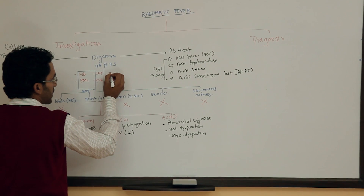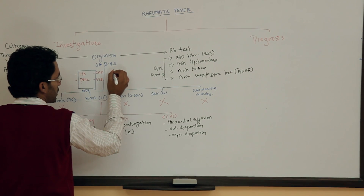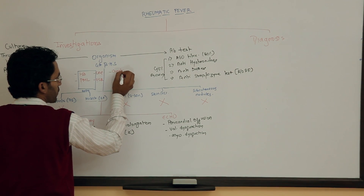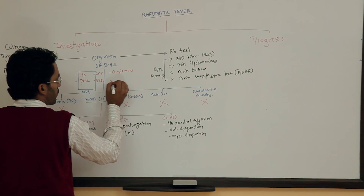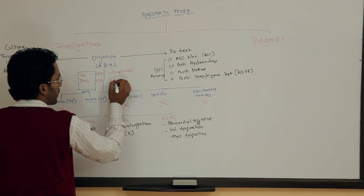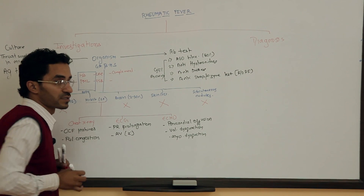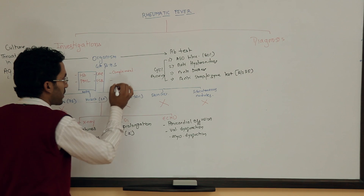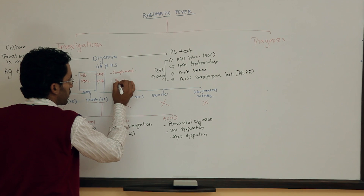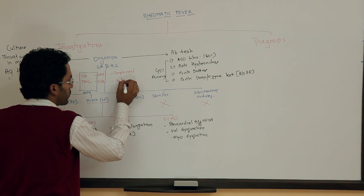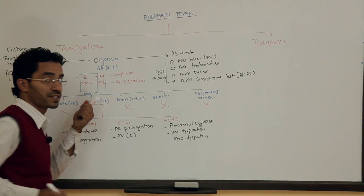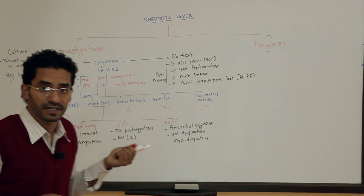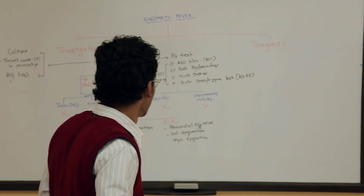Additionally, we can go for complement levels, and for globulins — Alpha-2 and gamma globulins. Mucoproteins, Alpha-2, and gamma globulins are also assessed. These are the investigations that are important in rheumatic fever.